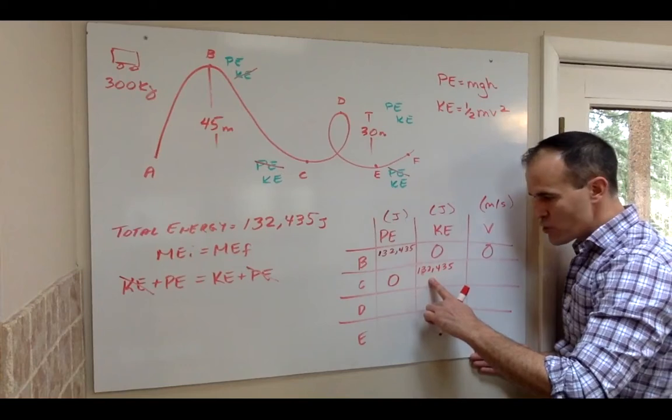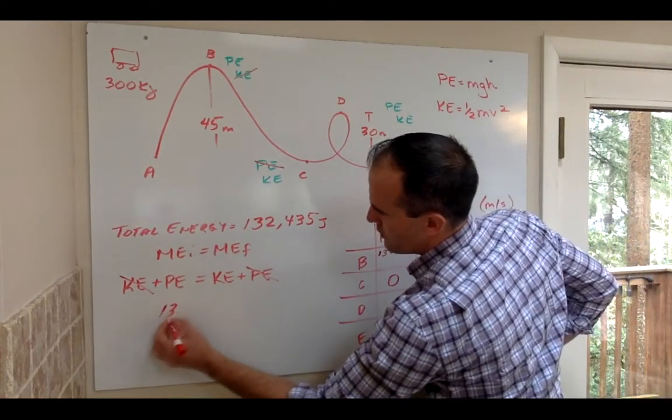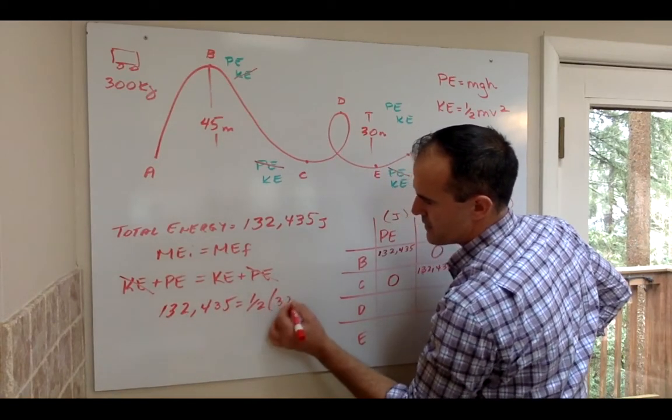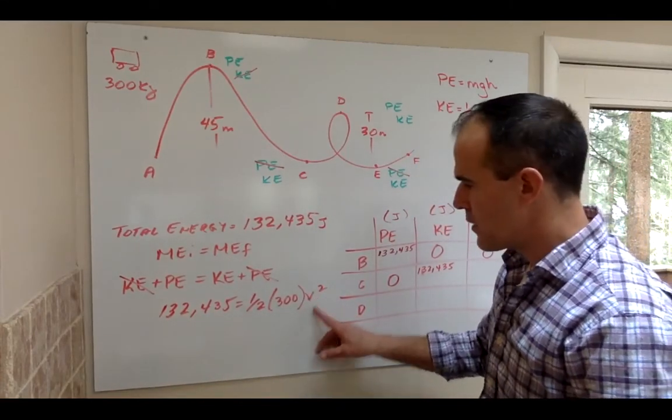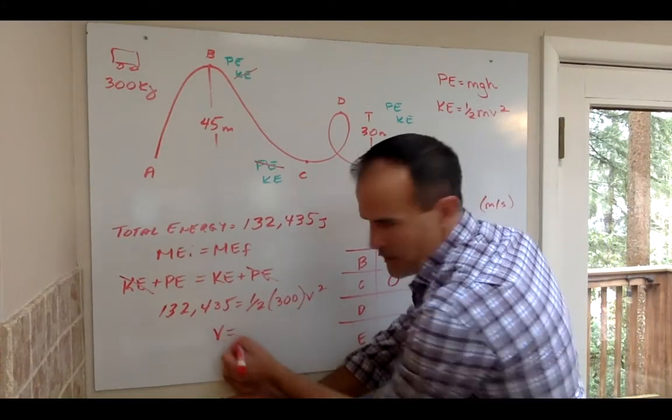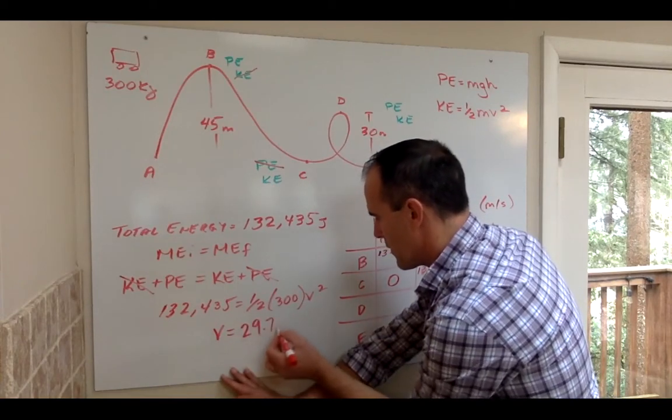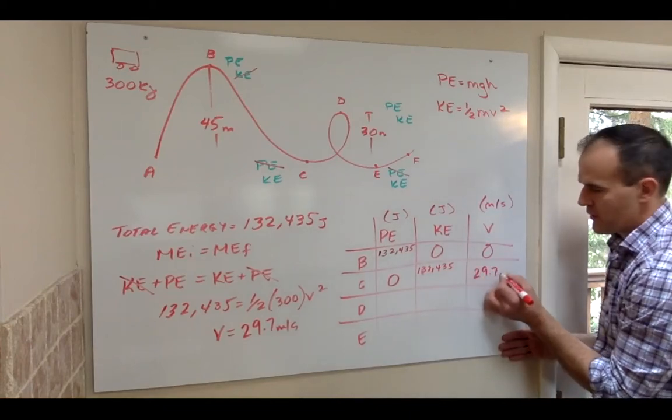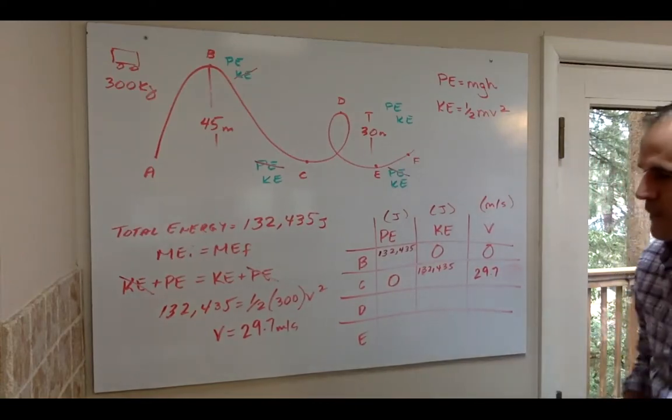So now we just have to pull the V out and figure out how fast they're going. So if all this energy is in the form of motion type energy, let's solve for the V. So what I mean is 132,435 joules is one-half mass times velocity squared. So we just want to solve for that velocity there. So divide over by the half, divide over the 300, square root that thing, and you should get a velocity of 29.7 meters per second. So that means you should be going 29.7 meters per second.